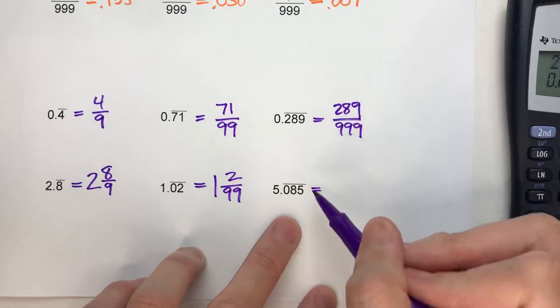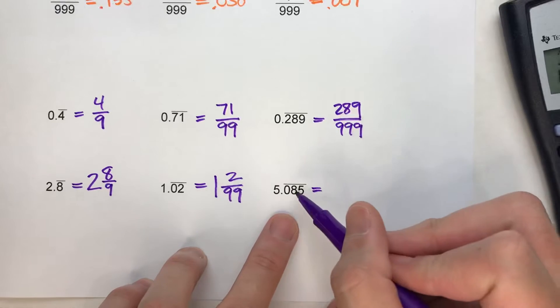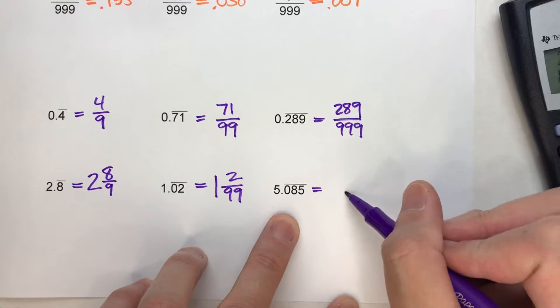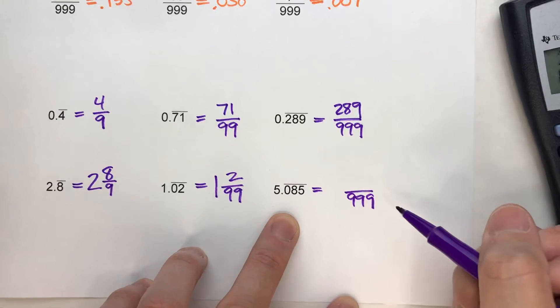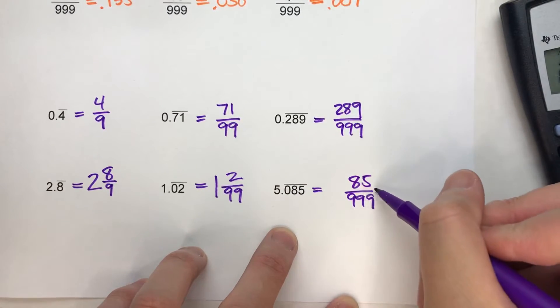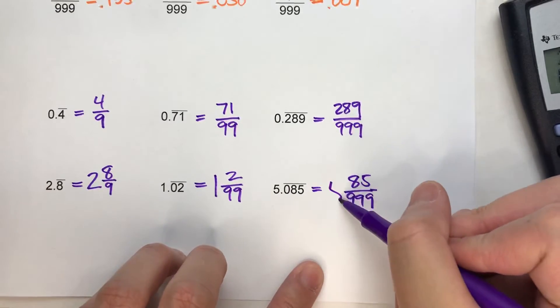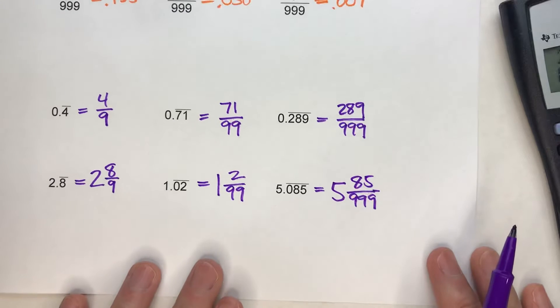Last one. 5.085 with the 085 repeating. So three digits are repeating. So 999 is my denominator. The 085 are the digits repeating. So the 85 goes on top as my numerator. And then the whole number is 5. So I'm just going to stick that in front of my fraction. There you go.